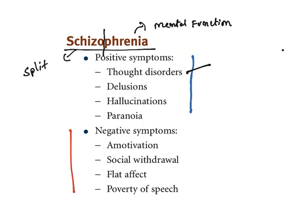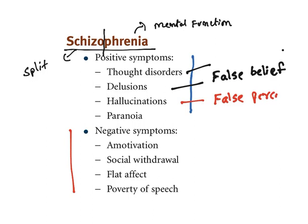One of the major characteristics of schizophrenia is delusions — false beliefs. Without any truth in certain beliefs, people start believing in them. Hallucination is another positive symptom, meaning false perceptions — people perceive or sense things that are not there.